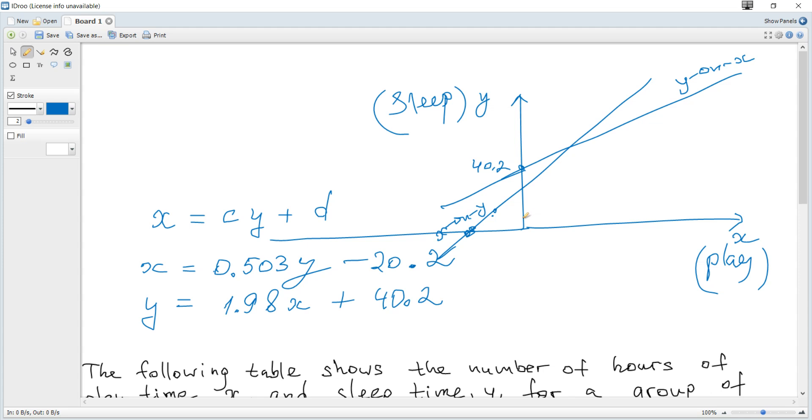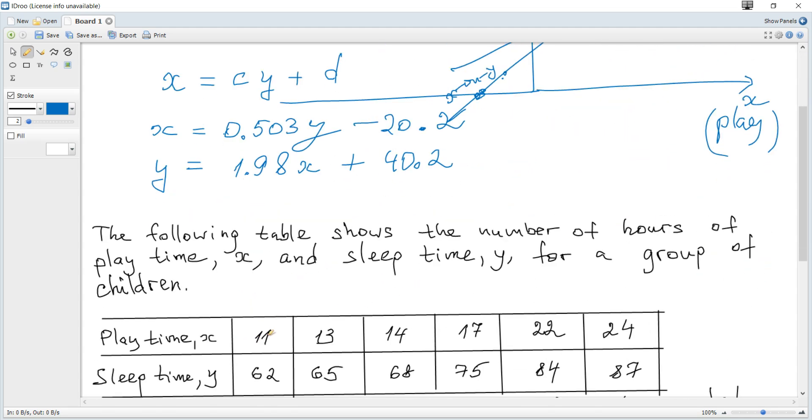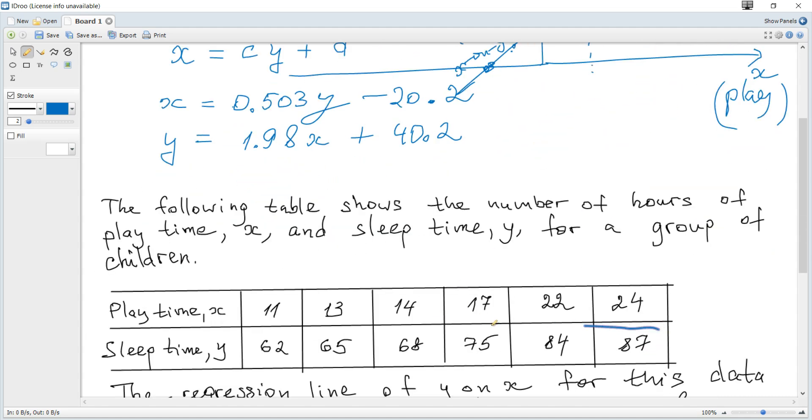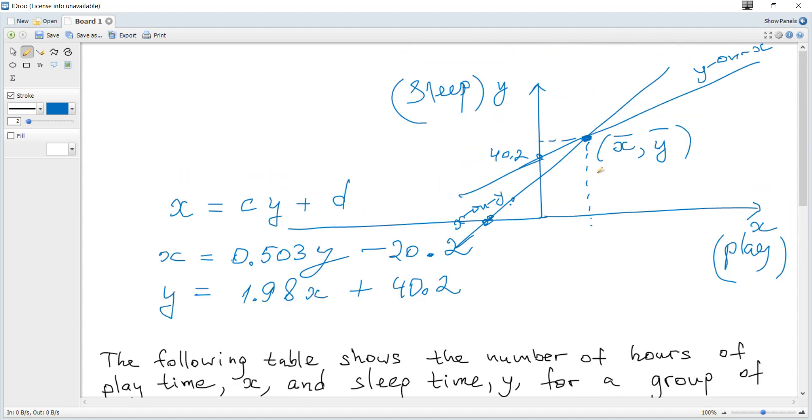And they intersect, they meet at the point which is mean x, which has coordinate mean of x and mean of y. What does mean? Mean just if you add up all these x values and divide by 6, total number of frequency, it becomes x coordinate of point of intersection. And mean of y, add up and divide by 6, it's y coordinate of this point of intersection.